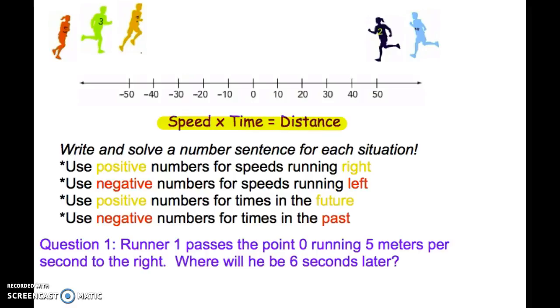Our first question says this: Runner one passes the point zero running five meters per second to the right. Where will he be six seconds later? I'll walk you through this first example. So here's runner one.